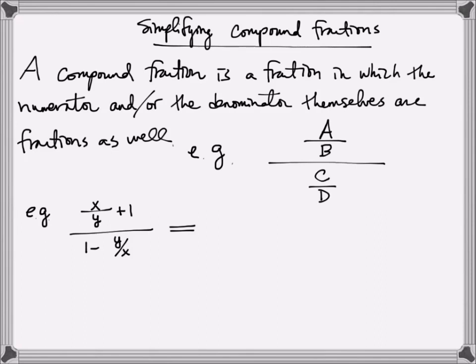To simplify the numerator, I will get a common denominator of y, which means I need to multiply the 1 by y over y. So I have x plus y, all divided by y. For the denominator of this compound expression, I have the denominator of x, which means I need to multiply by x over x for the 1 there, giving me x minus y, all divided by x.